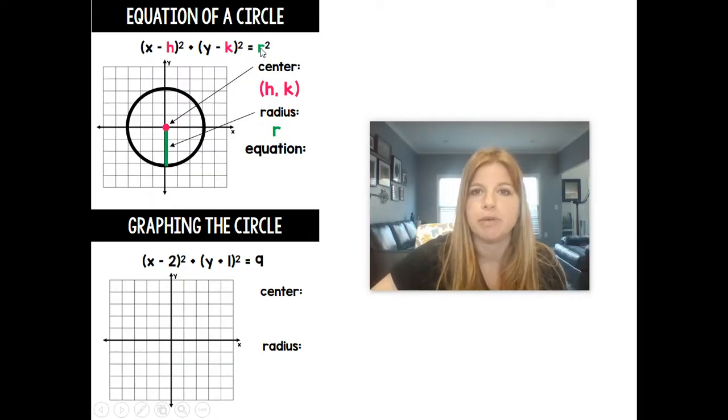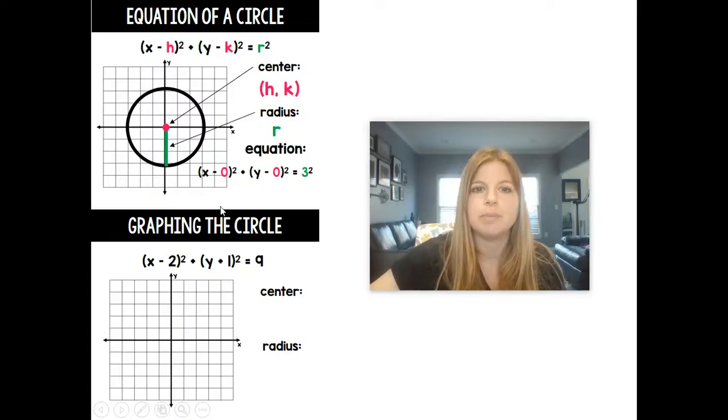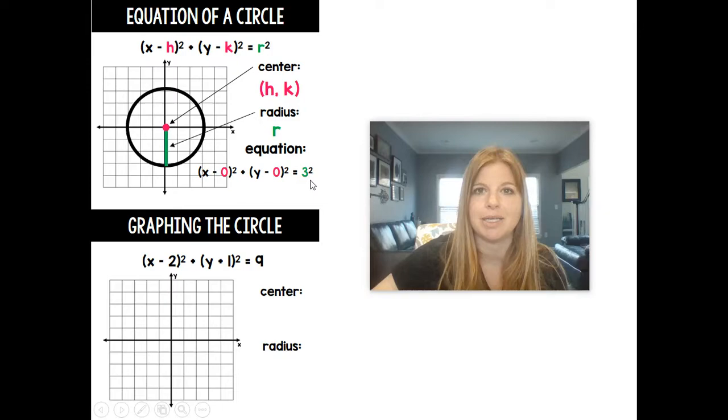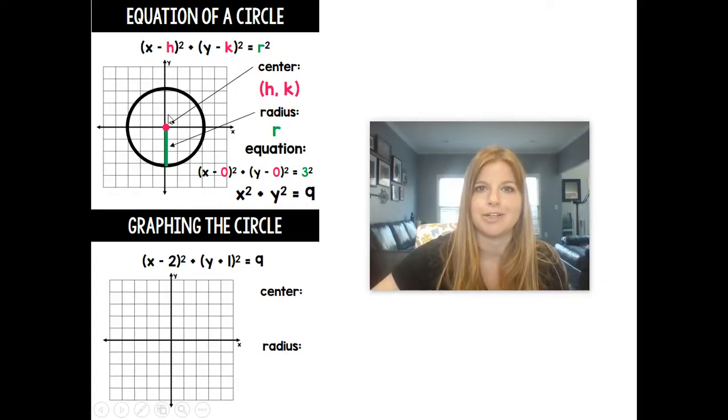So I would plug in a 3 and I would square it because it's equal to the radius squared. That's just part of the formula. So if I was to plug those values in, I'd have x minus 0 squared plus y minus 0 squared equals 3 squared, which actually just becomes x squared plus y squared equals 9. This right here is the equation for this circle.